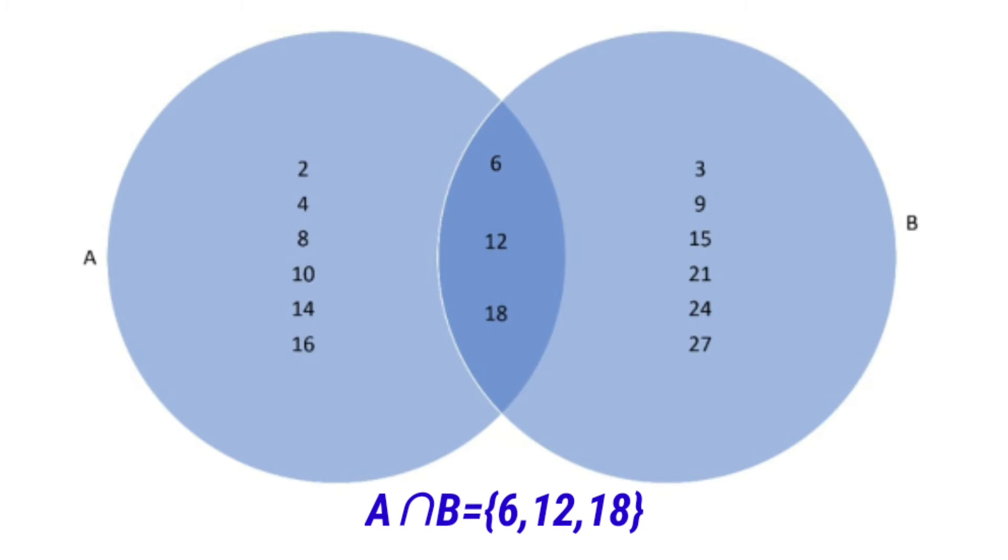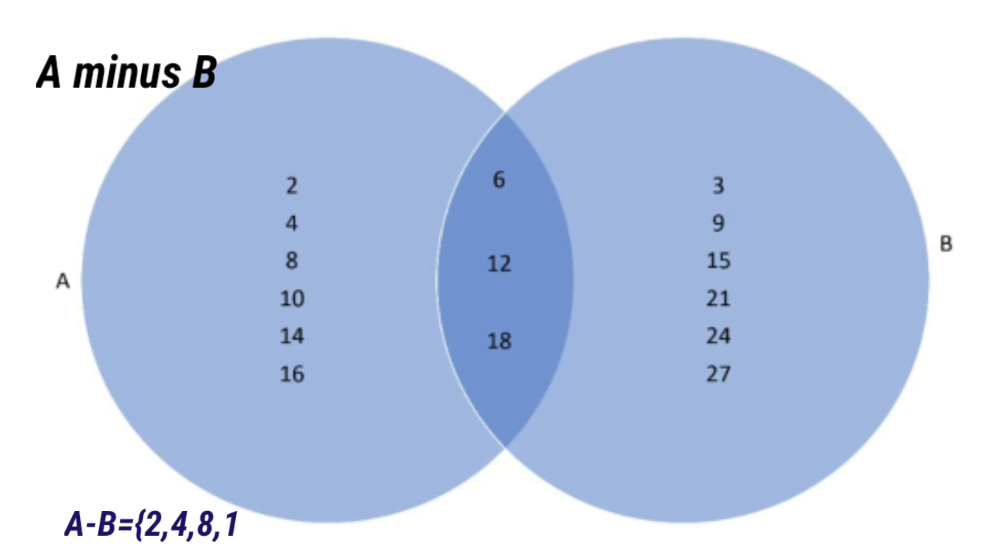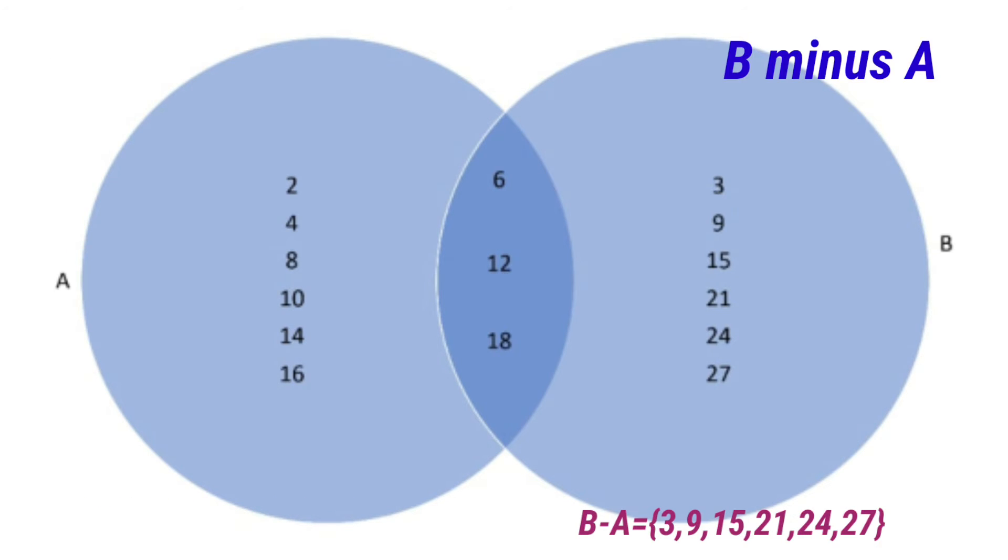A minus B means the elements which belong to A and do not belong to B. Similarly, B minus A means the elements that belong to B and do not belong to A.